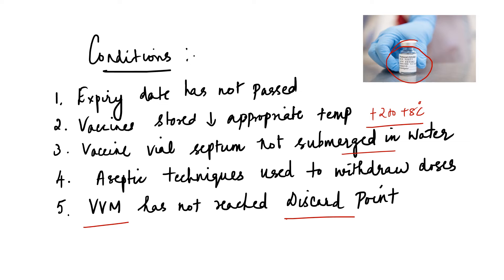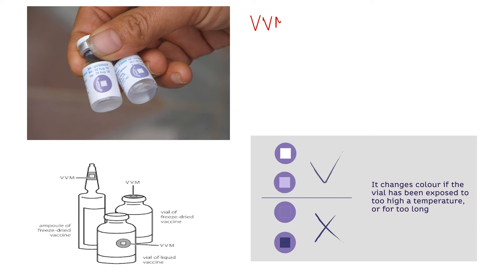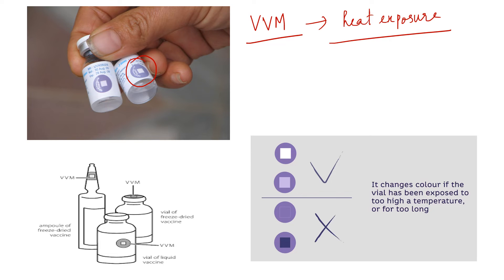The vaccine vial monitor is an indicator label attached on the vaccine vial that records cumulative heat exposure. It helps us discard vaccine vials that have been heat damaged or exposed to high temperatures. If the color of the inner square is the same as or darker than the outer circle, the vaccine should be discarded. If the inner square is lighter than the outer circle, the vaccine can be used.